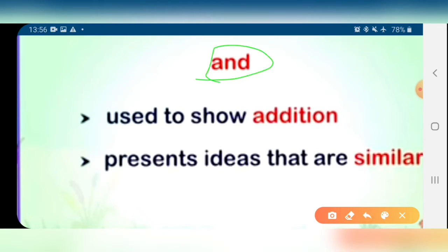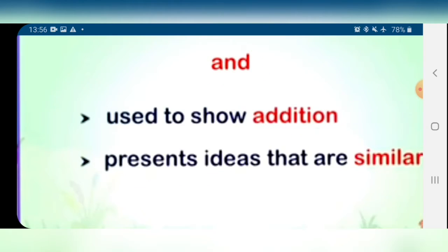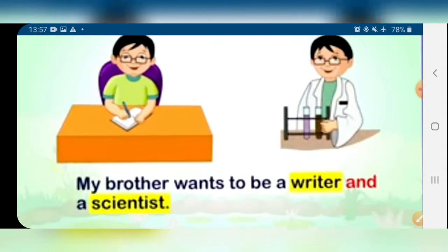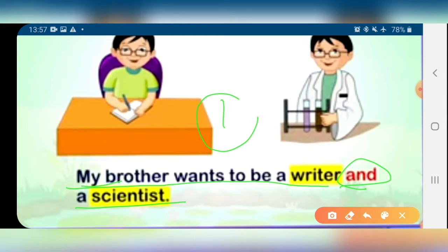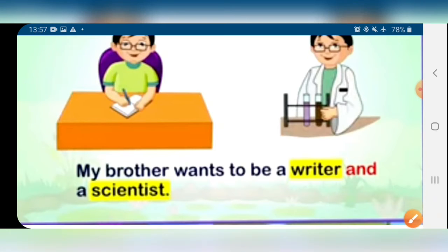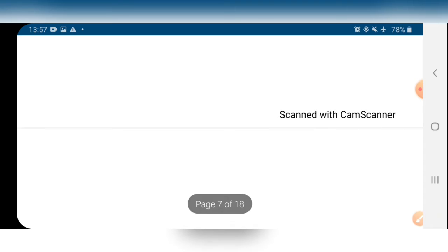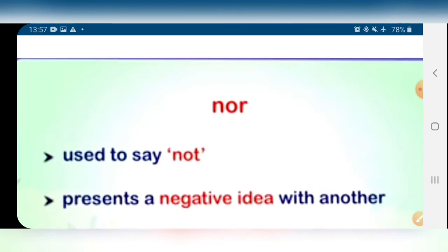The second is 'and'. 'And' is used to show addition and it presents ideas that are similar — similar thoughts, similar actions, similar ideas. For example: 'My brother wants to be a writer and a scientist.' There are two ideas — my brother is one person but he wants to be a writer and a scientist. So 'and' is used to add two similar ideas and actions.